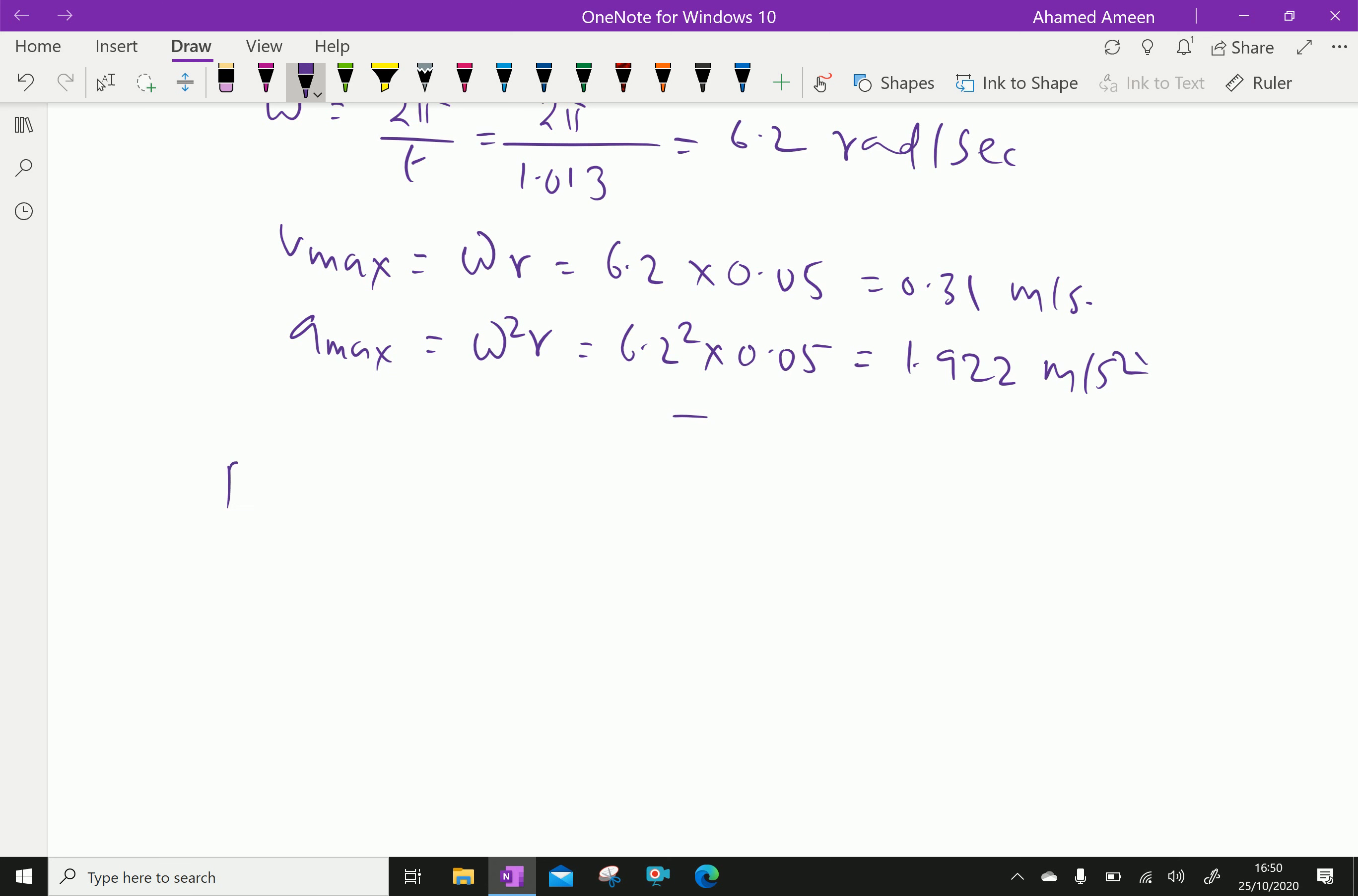Springs are in parallel. In parallel condition, equivalent stiffness S equal S1 plus S2, which is equal to 5 plus 8, equal to 13 kilonewton per meter.